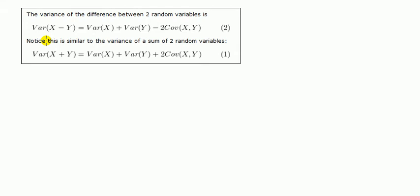Hi everyone, Phil from StatisticsMentor.com. We're going to be looking here at the variance of a difference of two random variables. The variance of x minus y is equal to the variance of x plus variance of y minus two times the covariance of xy.